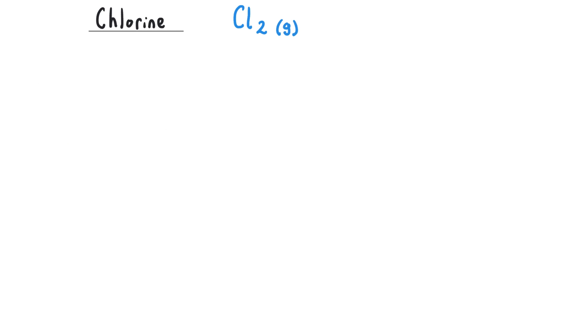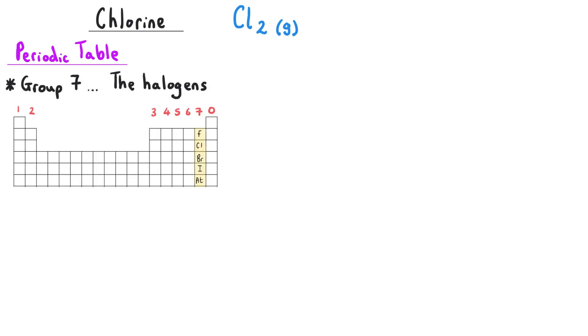You encounter chlorine in quite a few different topics. First of all, the periodic table topic, you need to know about the halogens, which is group seven of the periodic table and the place where we find chlorine. So you could encounter it there.